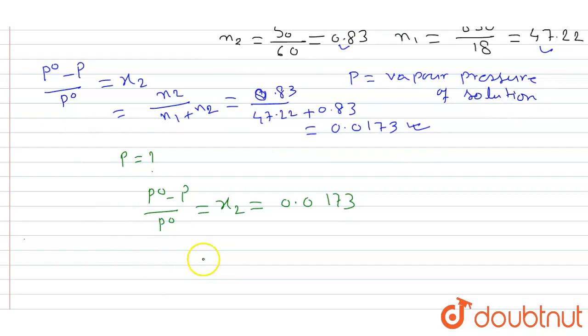So we put the value here, that is 23.88 minus P by 23.88 equal to 0.0173, and from solution we get that P equal to 23.4 mm of Hg.